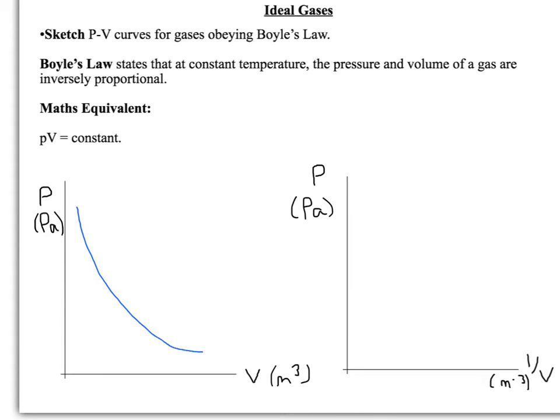If we do a P versus V curve, you get something that looks like this. As you increase the temperature, your curve shifts diagonally up to the right. These are three different temperatures, and this is the relationship between pressure and volume.